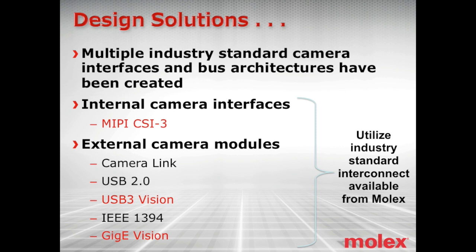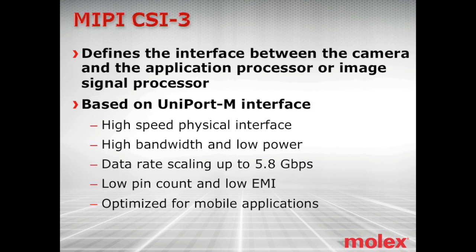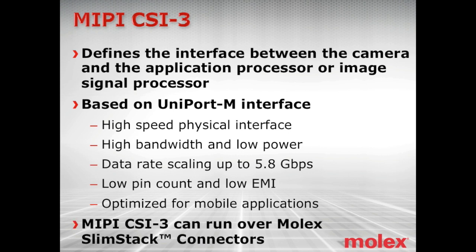Let's dive into the internal interface problem first — getting all that data from the sensor to the application or image processor. MIPI CSI-3 defines the interface between the camera and the application processor or image signal processor. It's based on the UniPort-M interface: high-speed physical interface, high bandwidth and low power, data rate scaling up to 5.8 gigabits per second, low pin count, low EMI, and optimized for mobile applications. MIPI CSI-3 can run over Molex SlimStack connectors.